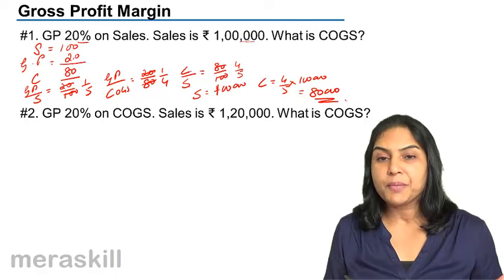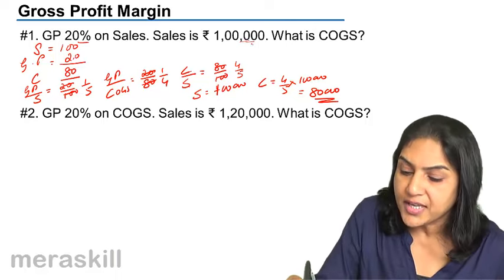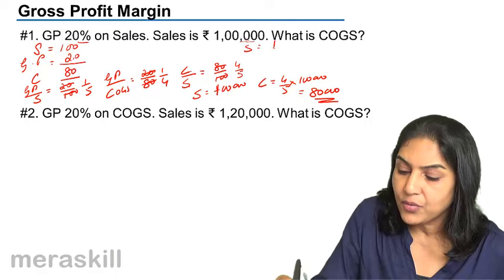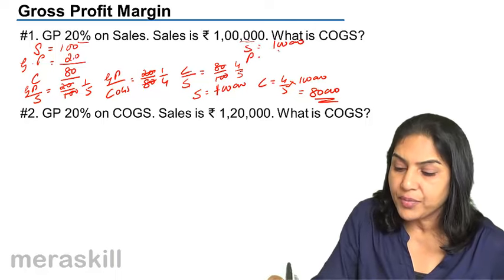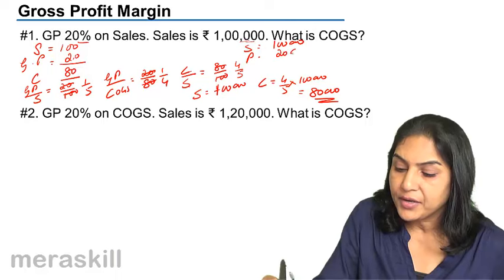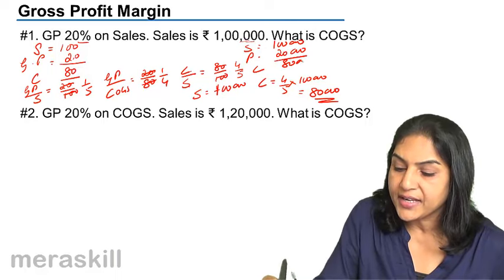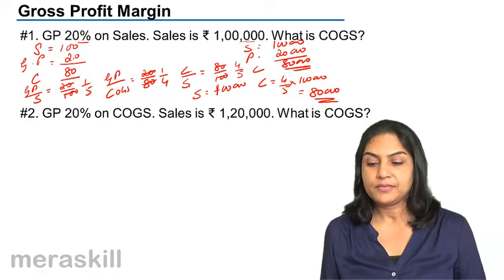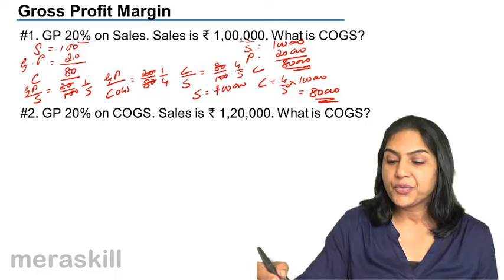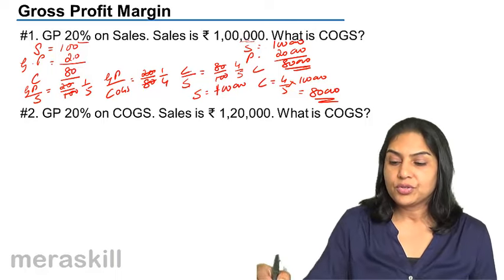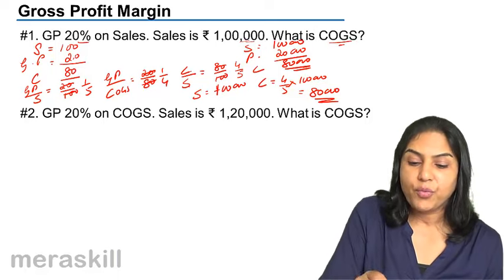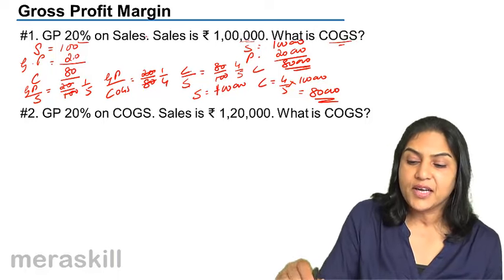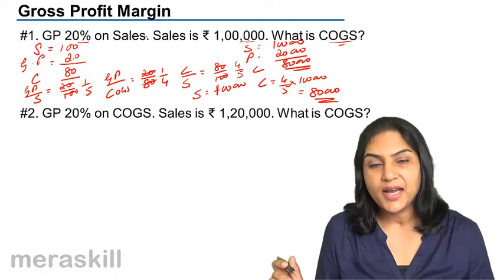We can also compute it another way: sales is 1 lakh, profit is 20% of 1 lakh which is 20,000, therefore cost is 80,000. Either way the cost of goods sold is 80,000. Remember, if one is given it is always easy to find the other.